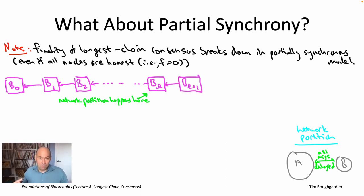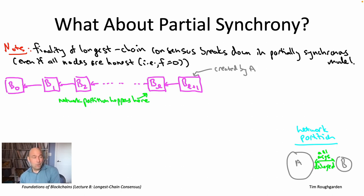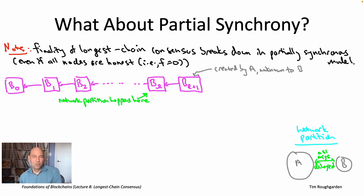Node 21 is either in A or B — say it's in A. From the perspective of nodes in A, everything looks normal: they hear from node 21, the current leader, and accept the new block B sub L plus one. Node 21 tries to tell nodes in B about this block, but the message delivery adversary delays all those messages. So nodes in B don't hear from node 21 and assume it's Byzantine or just wasted its slot. They carry on and wait for node 22 at time step 102.